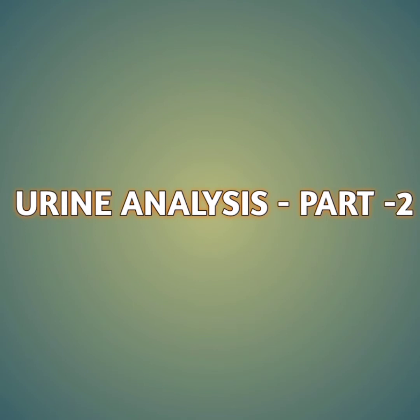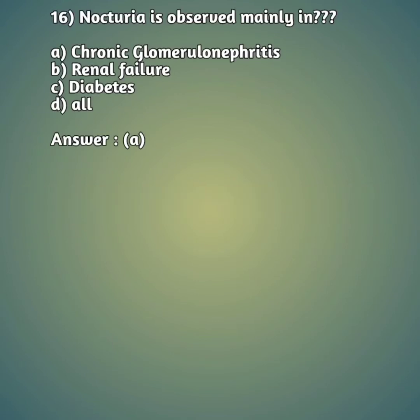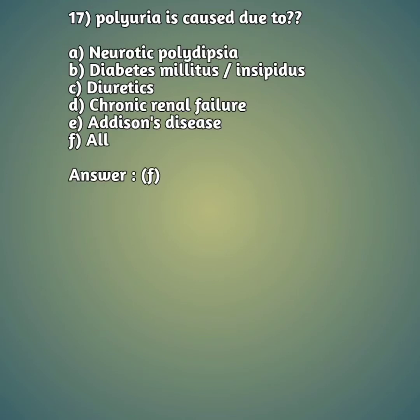Question 16: Nocturia is observed mainly in — option A: chronic glomerulonephritis, option B: renal failure, option C: diabetes, option D: all. The right answer is option A, chronic glomerulonephritis. Nocturia can be observed in chronic glomerulonephritis.